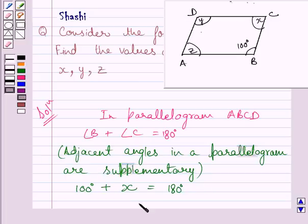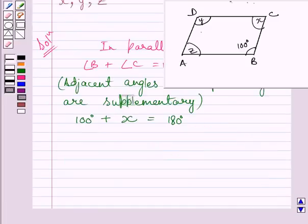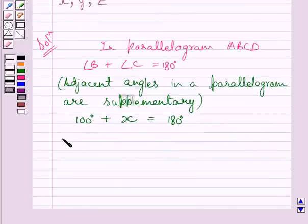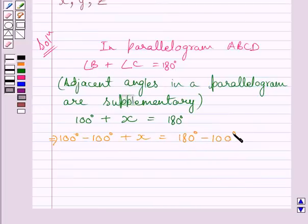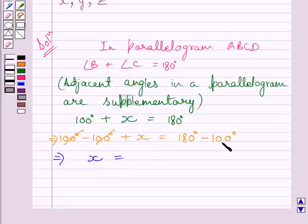To solve this equation for variable x, we subtract 100 degrees from both sides. We get 100 degrees minus 100 degrees plus x equals 180 degrees minus 100 degrees. Since 100 minus 100 is 0, we are left with x equals 80 degrees. So the value of x is 80 degrees.